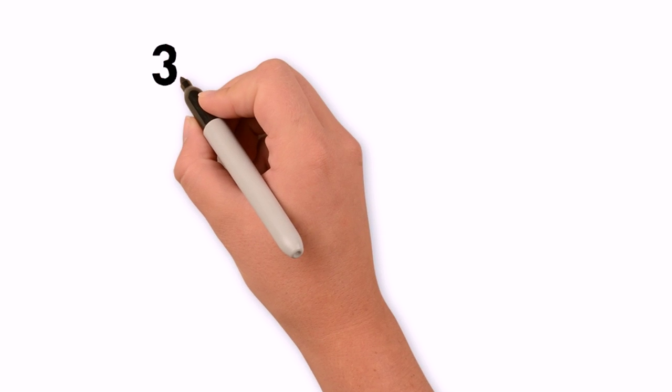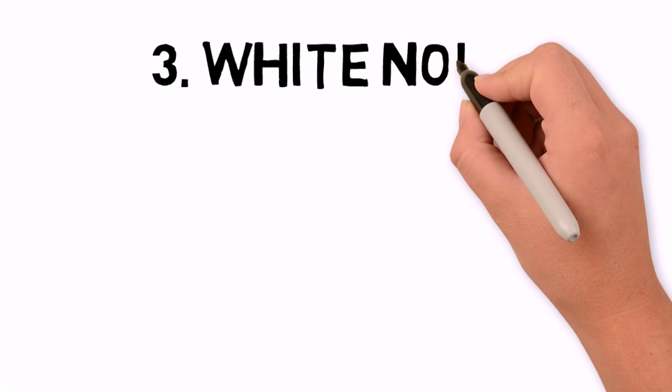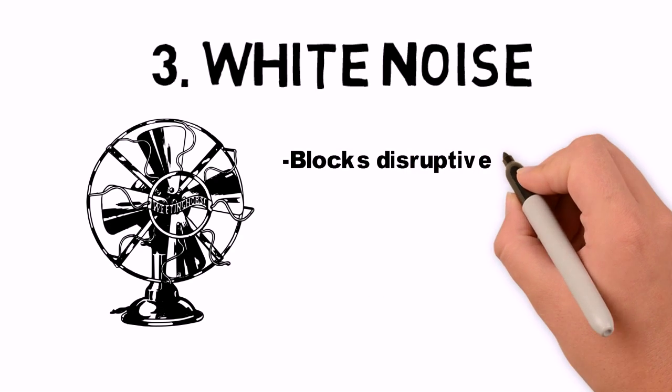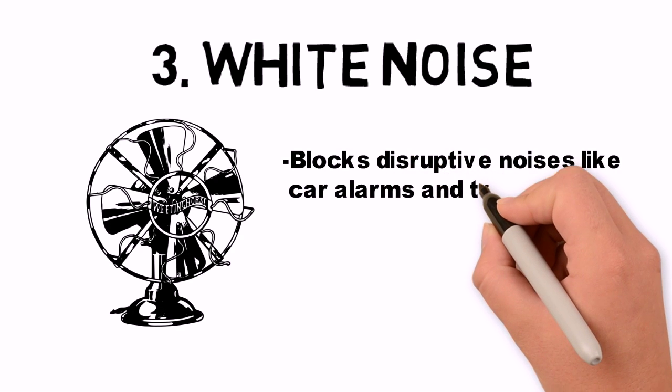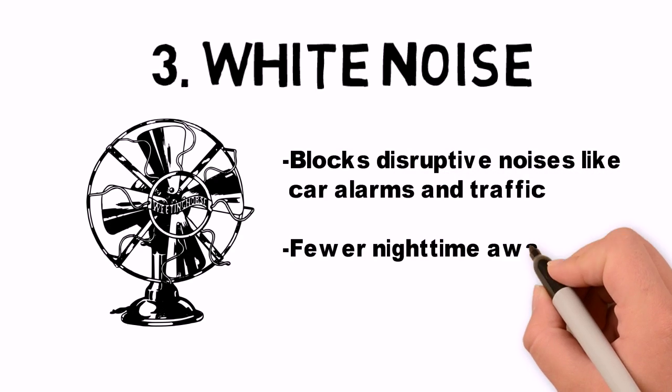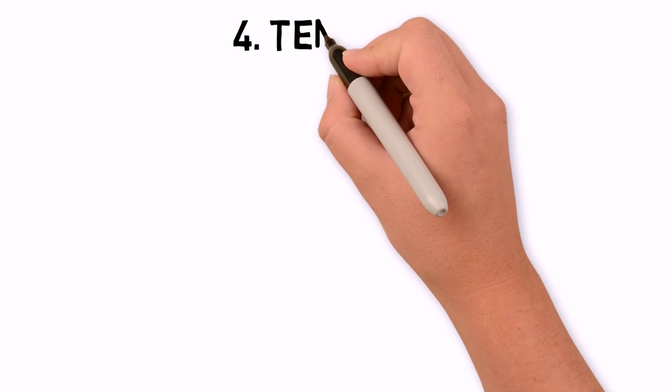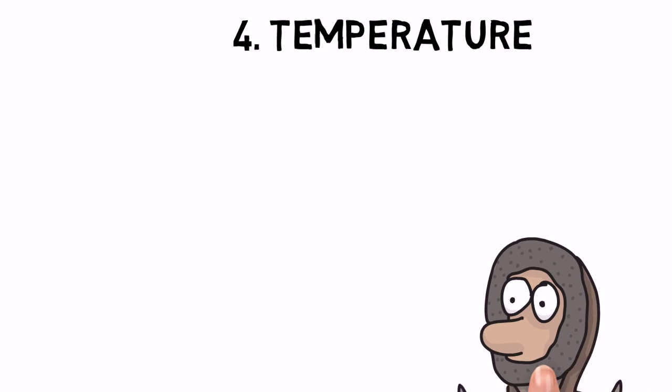Habit three: white noise. The constant low-level noise from a white noise machine or even a simple fan can block out more disruptive noises like car alarms and traffic, leading to deeper, uninterrupted sleep. Habit four: temperature. Falling body temperature...